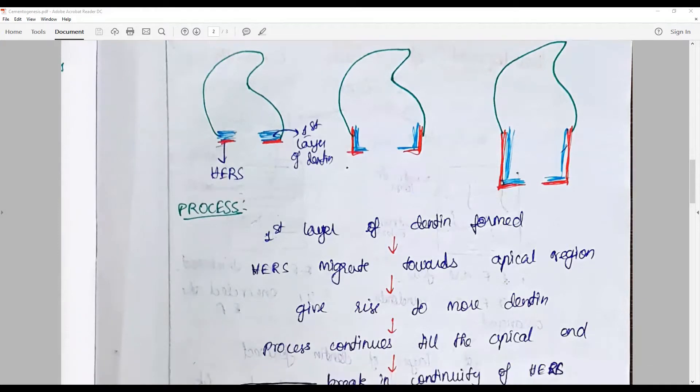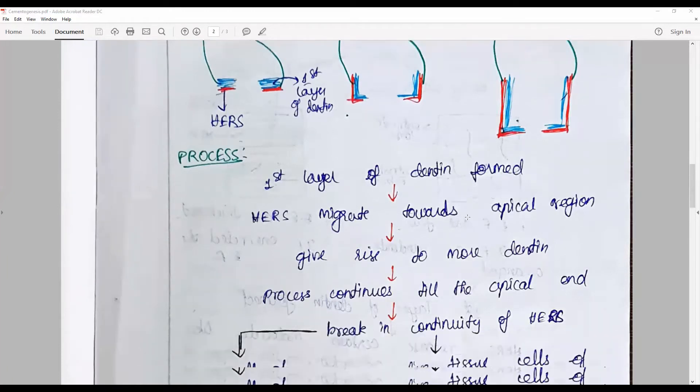This process slowly starts to initiate the subsequent layers of radicular dentin. The blue color here indicates the radicular dentin and the red indicates the HERS. When they start to proliferate and elongate, the HERS also stimulates the formation of radicular dentin, giving rise to more layers of dentin. This process continues till the apical end.